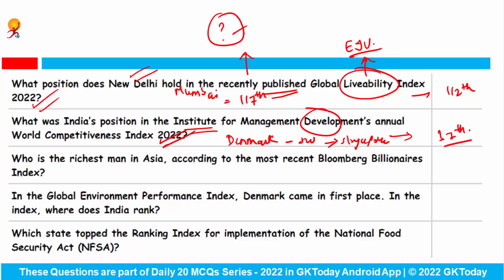Who is the richest man in Asia according to the most recent Bloomberg Billionaires Index? The top position in Asia was Mukesh Ambani, and the second position was Gautam Adani. If we talk about the richest man in the world, it is Elon Musk, Tesla CEO, and the second position is Jeff Bezos.